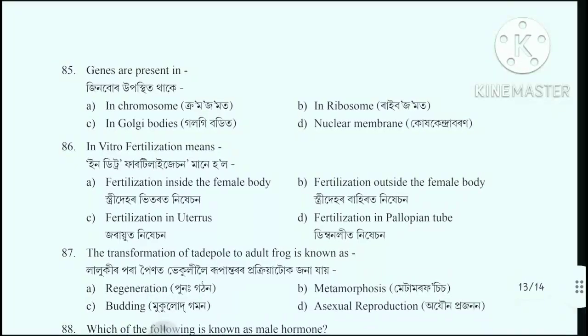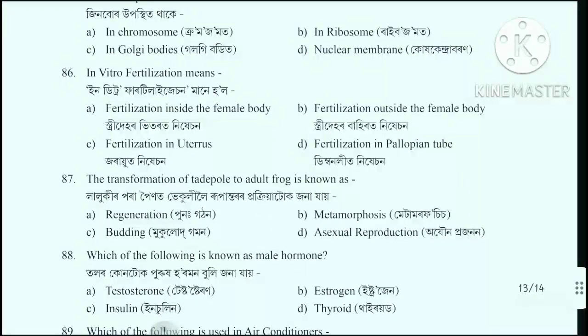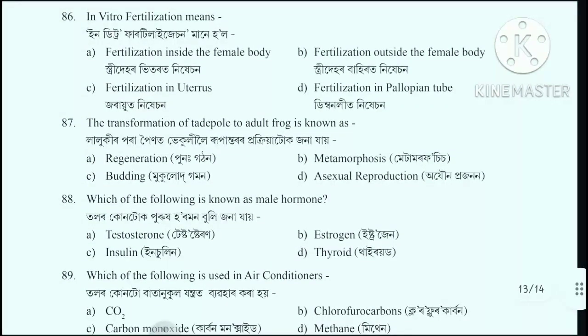Question number 85: Genes are present in - where are genes located? Option A: In chromosomes (Chromosomes). Question number 86: In vitro fertilization (IVF) means - IVF means option B: Fertilization outside the body.